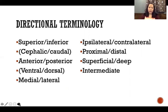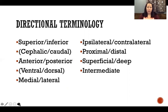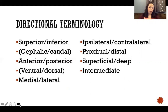Anterior means toward the front of the body, posterior toward the back. Ventral and dorsal aren't used as much with humans as with animals, but you will see them especially in neuroscience papers. Ventral is the belly side, dorsal is the backside — think of the dorsal fin of a dolphin, that's the fin on their back. In humans, anterior is the same as ventral and posterior is the same as dorsal, but anterior and posterior are used more often with humans.